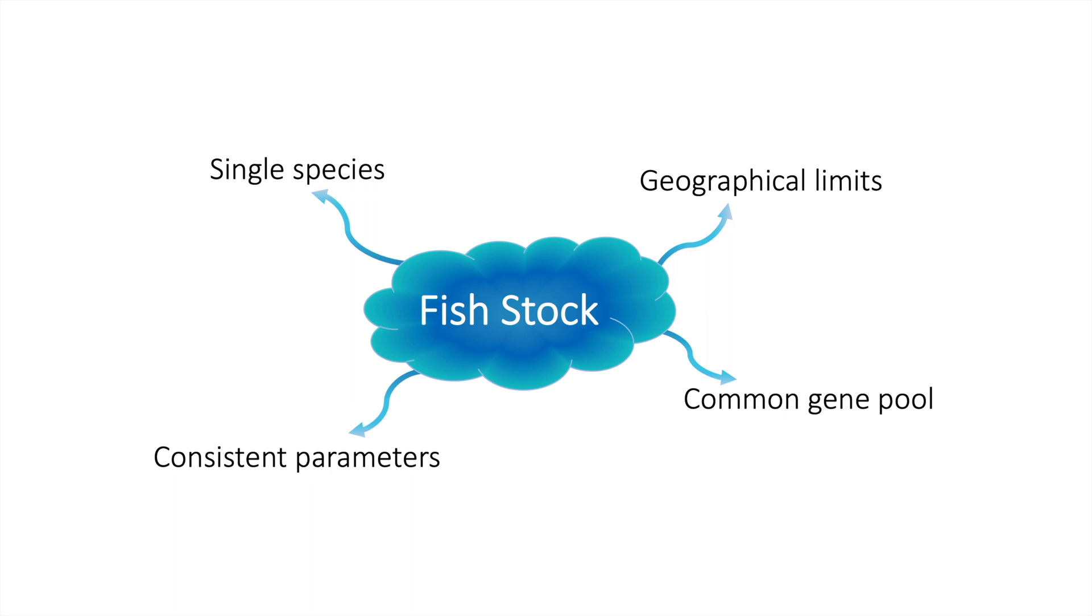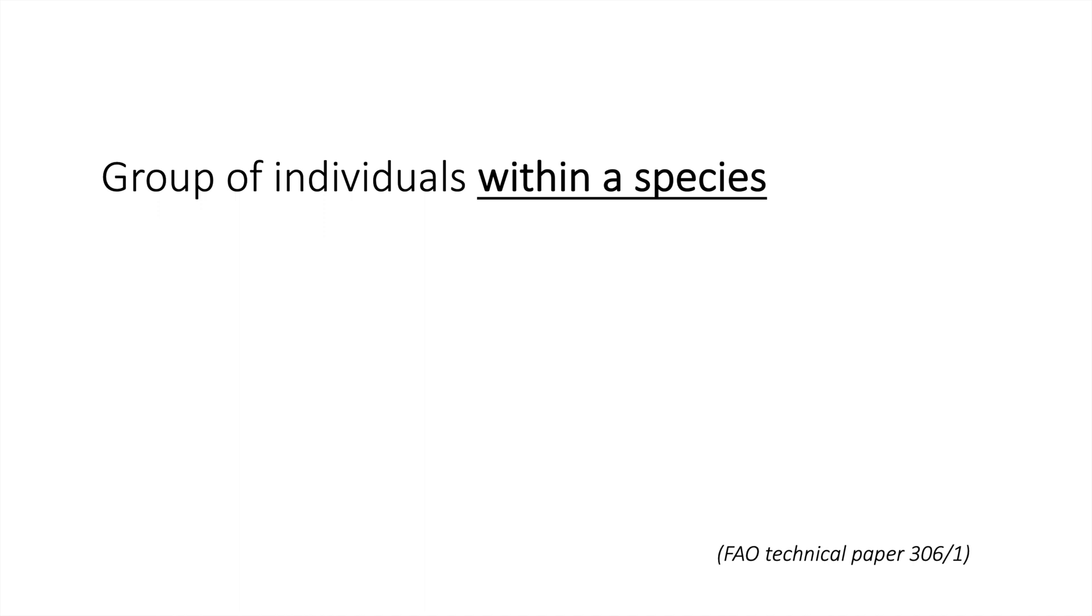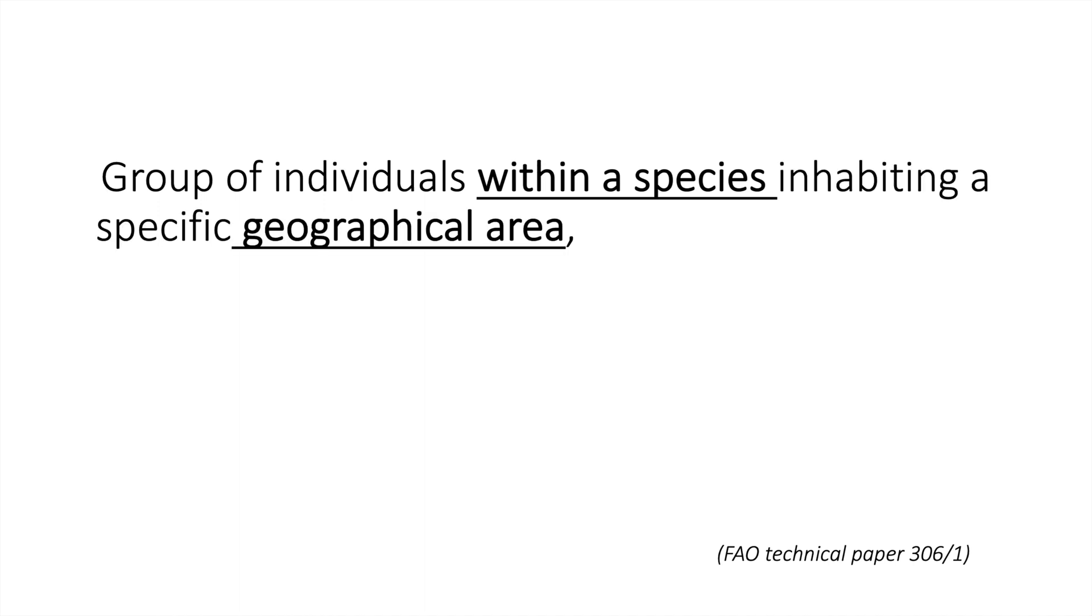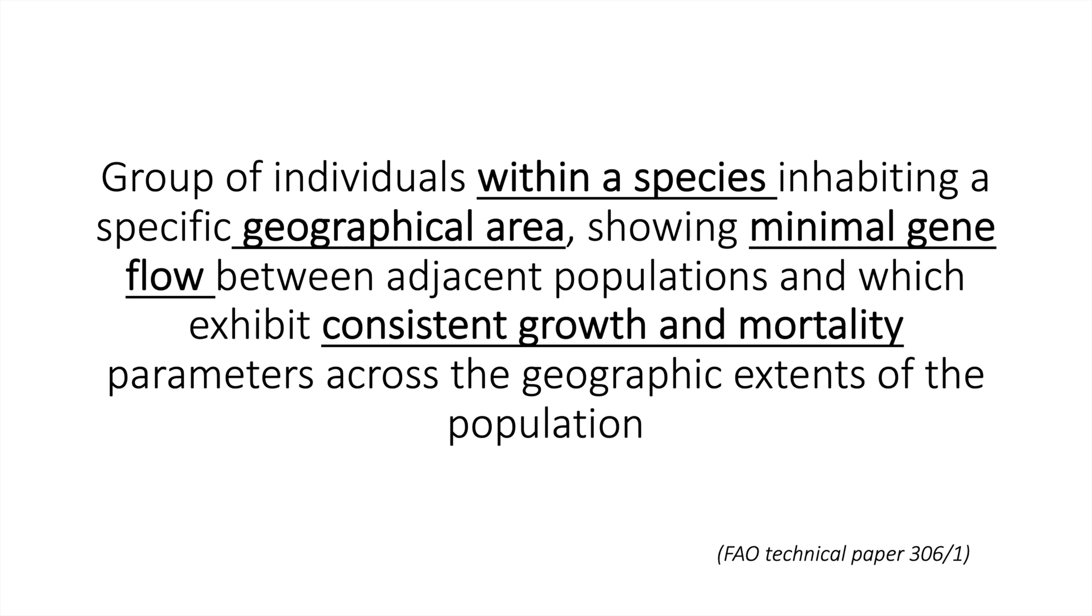So to summarize, a fish stock can be defined as a group of individuals from one species living in one area with limited gene flow, and where you can determine consistent growth and mortality parameters across the entire area. This is based on the definition issued by the FAO.